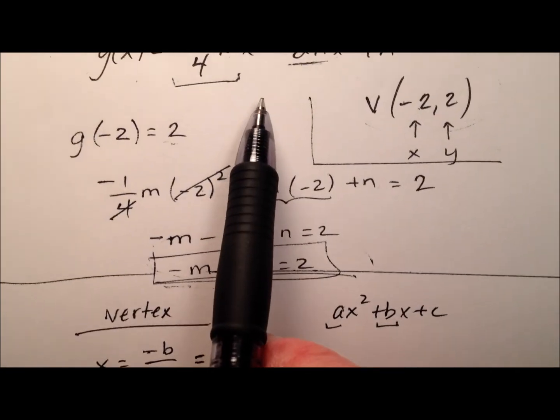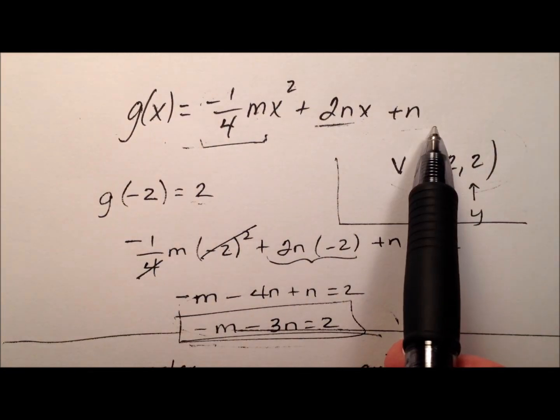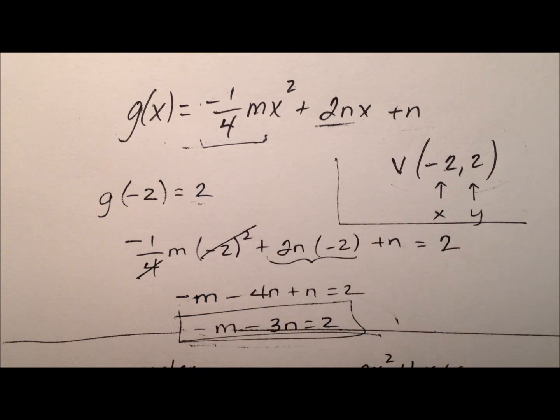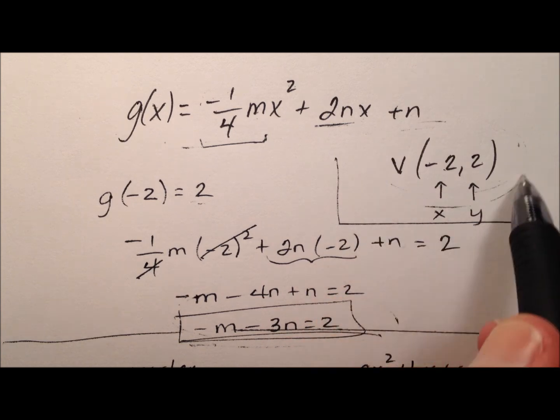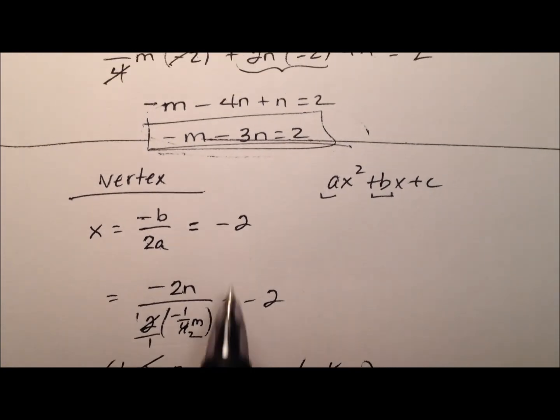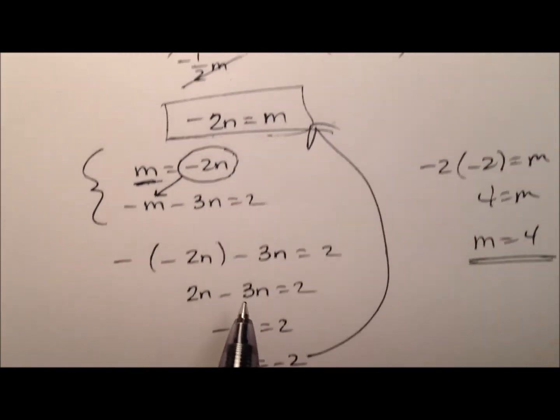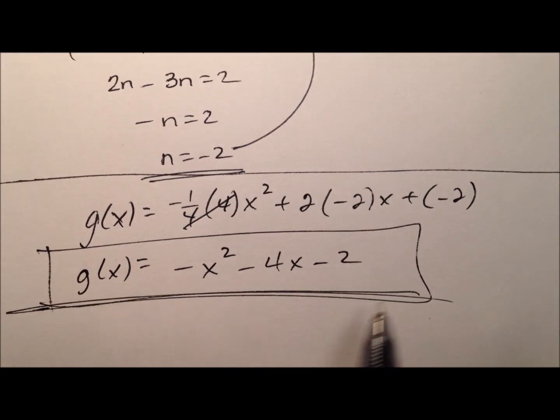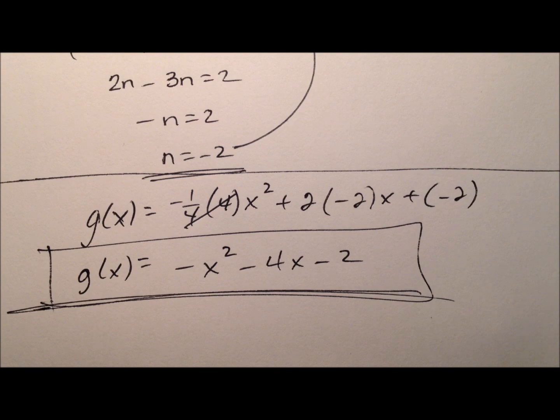And so, at the beginning, we were given a function, a quadratic function in standard form. And we were looking for values for m and n. But we did know one important piece of information. We knew the vertex. It was negative 2, 2. So, we were able to use some relationships that we have to write a couple of equations. We solved this system of equations. And we plugged in everything we knew. And there's our function g of x.